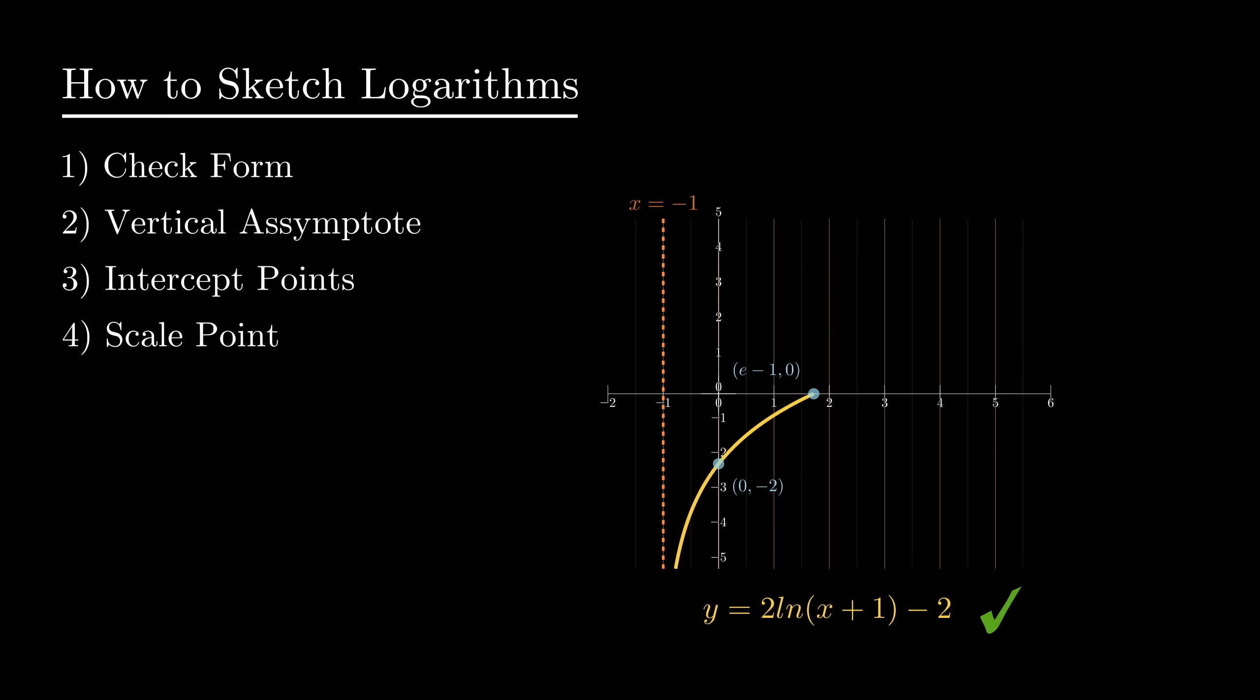A fourth and important point is to look for a scale point. A scale point will give us an indication of what the graph is doing after these intercept points.